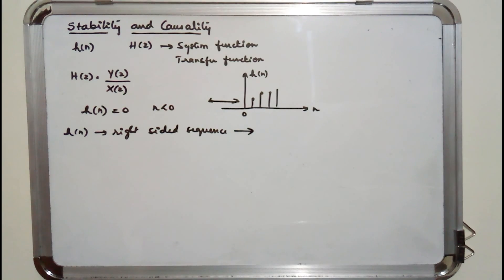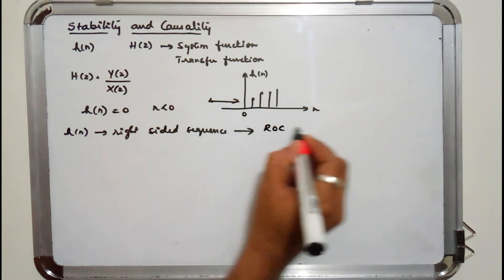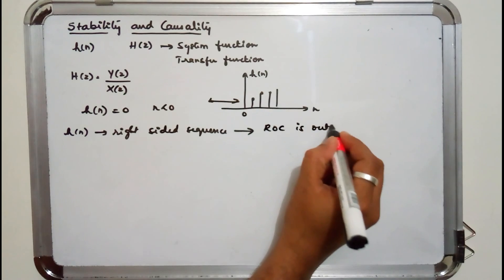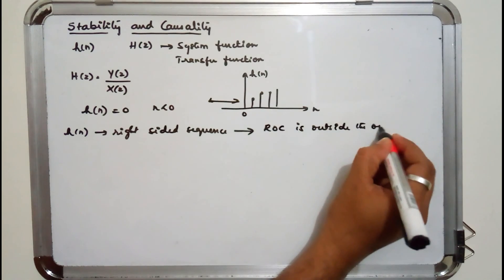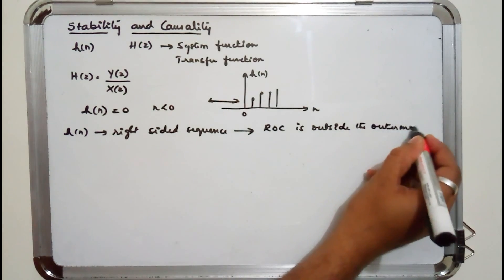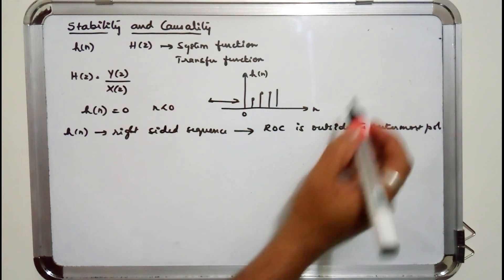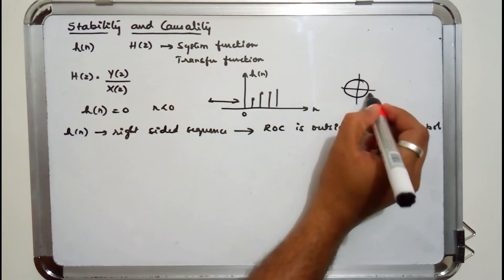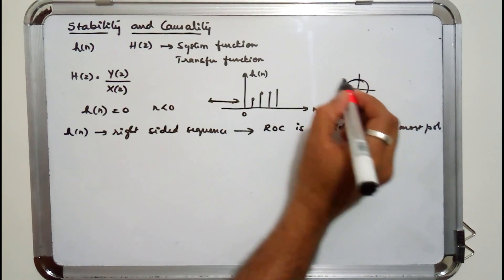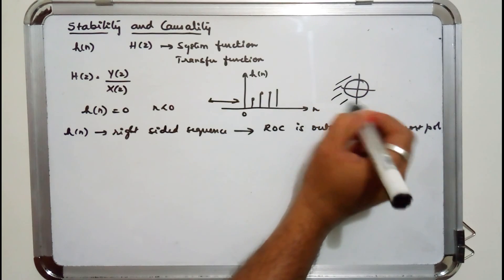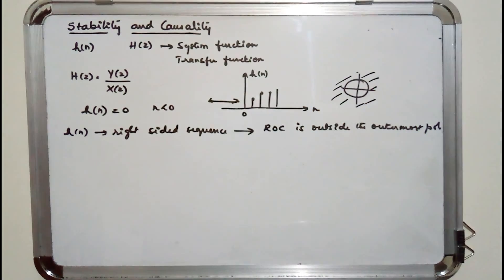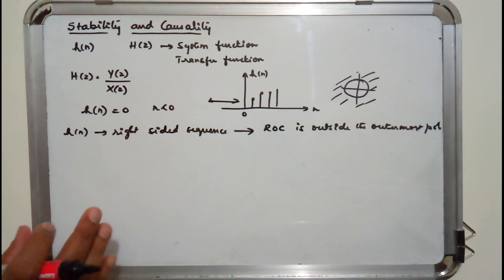For a right-sided sequence, the ROC is outside the outermost pole. The pole may be at radius 1 or 1/2, and the ROC will be outside the outermost pole. That is the condition for a system to be causal.